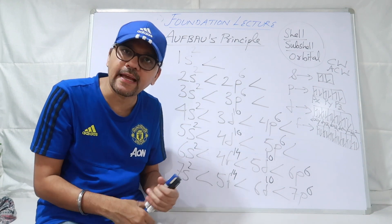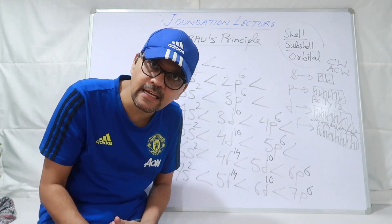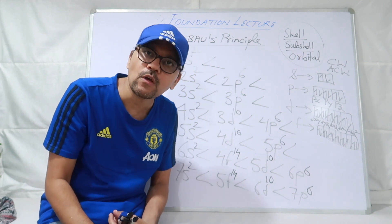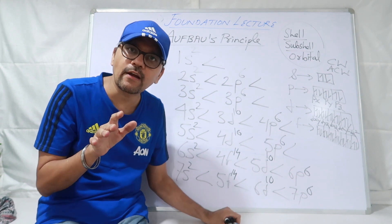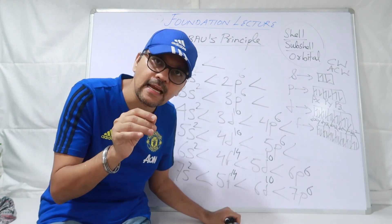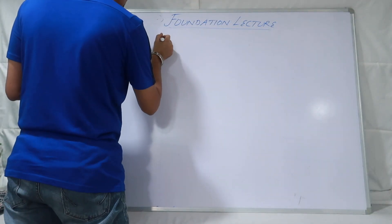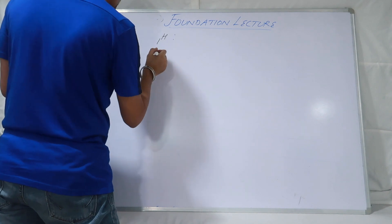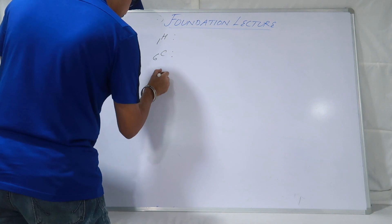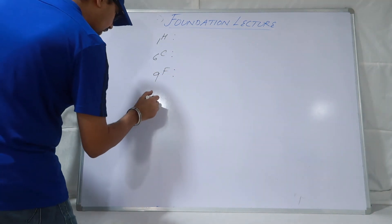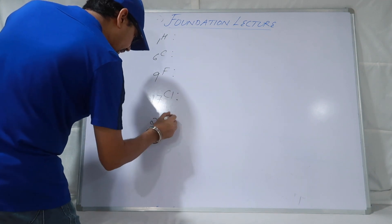Ab hum is Aufbau principle ko use karenge in writing the electronic configuration of 10 different elements. To 10 different elements mein aapko de raha hoon. We are going to use this formula for writing electronic configuration — not like 10th, but like 11th. Pehla lete hain: 1 Hydrogen. Doosra: 6 Carbon. Teesra: 9 Fluorine. Chautha: 17 Chlorine. Aur paanchwa: 20 Calcium.